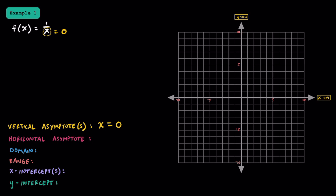As for the horizontal asymptote, let's take a look at the degrees. Since we can't really see the degrees, let's rewrite the function. In the numerator we have 1 x to the 0th power over x to the 1st power. It's helpful to remember that whenever we just see a constant, we really have an x to the 0th power next to it. Since the degree of the top is smaller than the degree of the bottom, as x becomes larger and goes towards infinity, the numerator is never going to catch up to the denominator, so this function is going to approach 0. We have a horizontal asymptote of y equals 0.